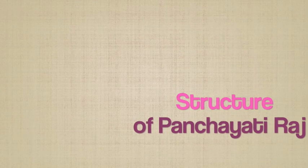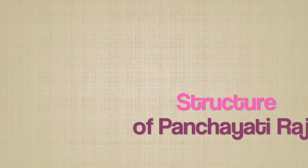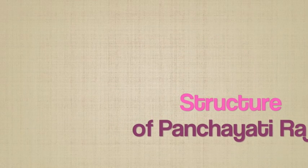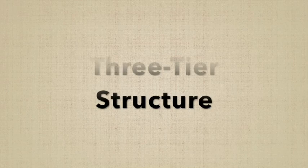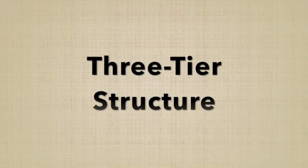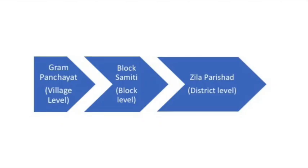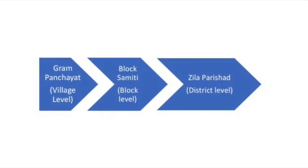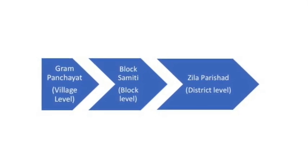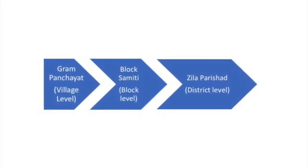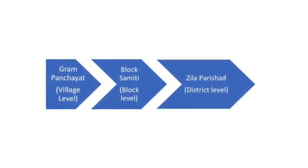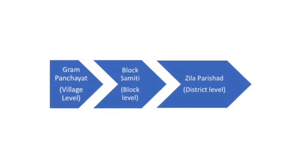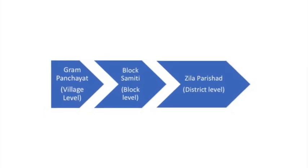Structure of the Panchayati Raj System. The Panchayati Raj has a three-tier structure: the Gram Panchayat at the village level, the Block Samiti at the block level, and the Zilla Parishat at the district level.